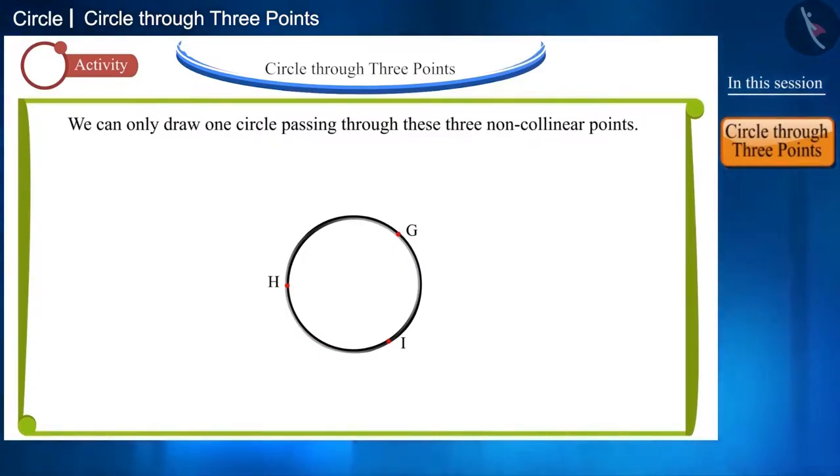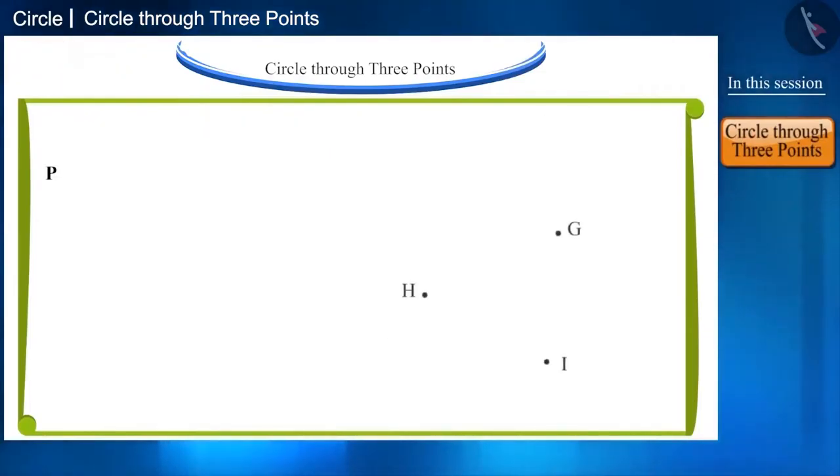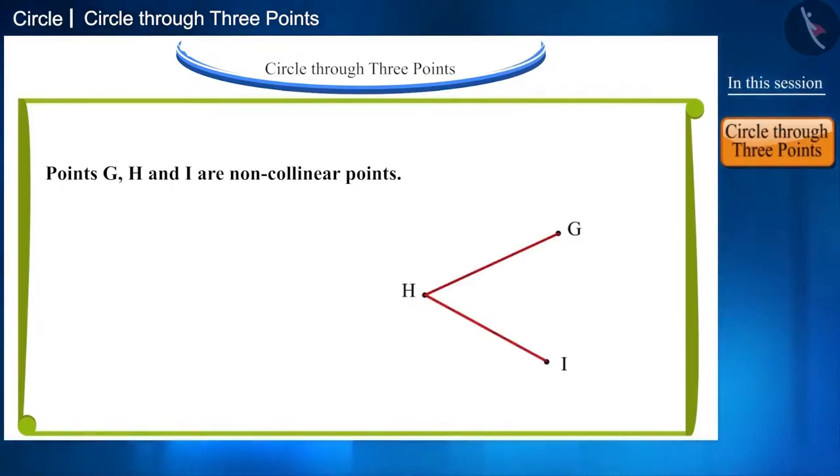Let us see the mathematical proof for this. First, let's join G, H and H, I this way. Draw perpendicular bisectors of GH and HI, that is PQ and RS respectively.